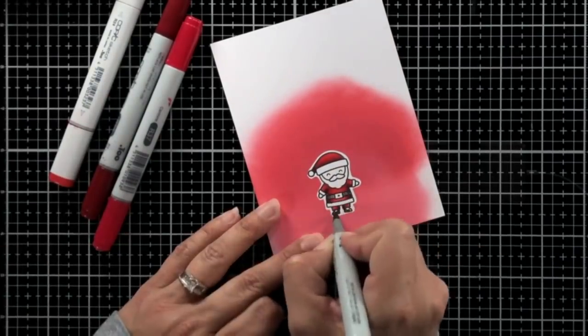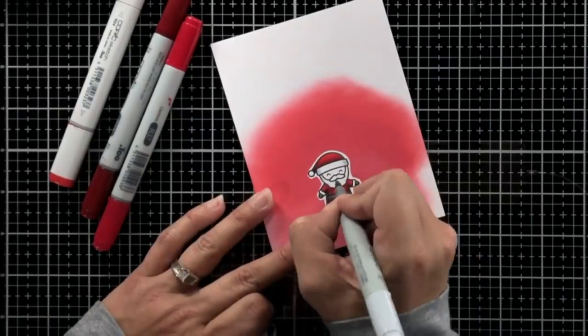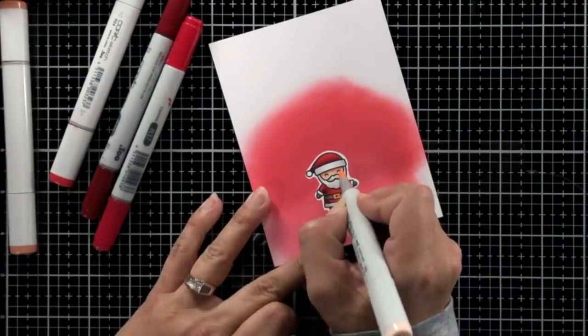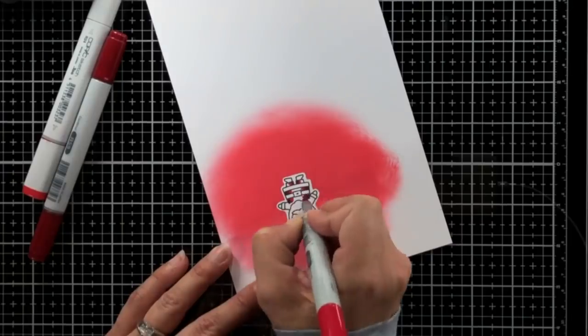Now for the belt buckle, I didn't do any ink blending there. I just did a straight yellow because the area is so small. And I didn't do a lot on the beard and mustache either. I did just a little bit of my cool grays, enough to show that there is color there.